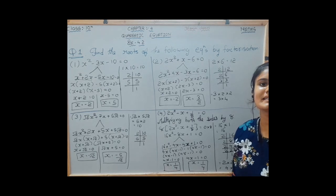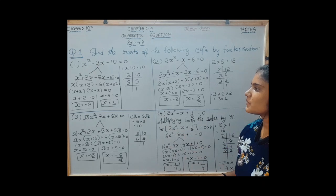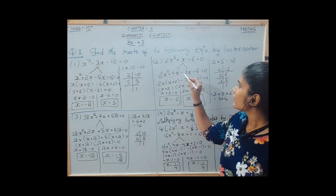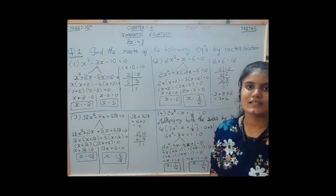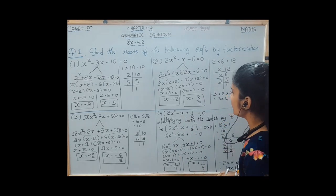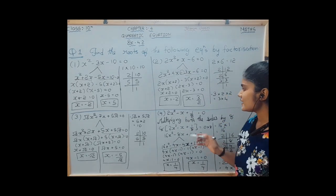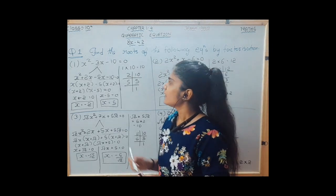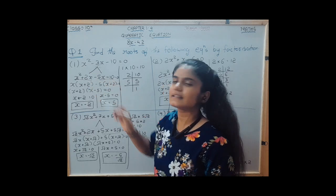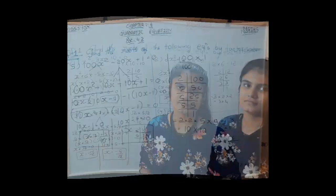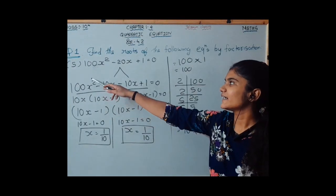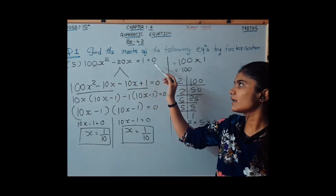We must pay careful attention to the signs used in the quadratic equation to ensure that the two split terms simplify back to the original middle term. Moving to number 5: 100x squared minus 20x plus 1 equals 0.